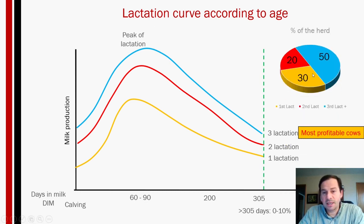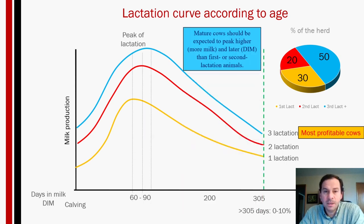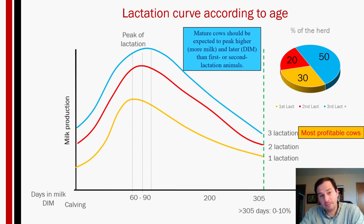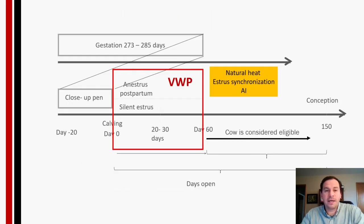This pie chart shows that about 50% of your herd should be in third lactation or higher, since mature cows produce more milk and peak later in days in milk. These animals will eventually leave the farm and younger cows will move up, maintaining a healthy herd dynamic.